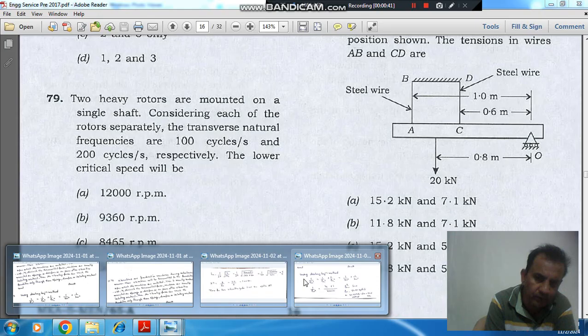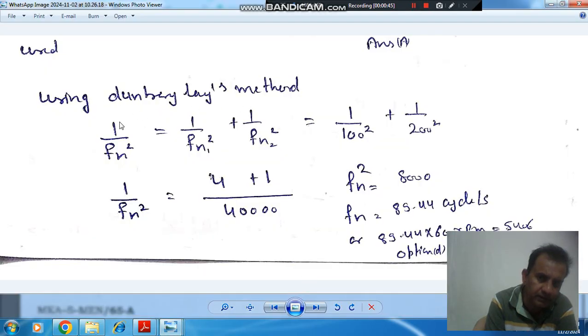According to Dunkerley's method, the combined natural frequency of the two rotors is: 1/fn² = 1/fn1² + 1/fn2². Here fn is the combined natural frequency of the system, fn1 is the natural frequency of the first rotor, and fn2 is the natural frequency of the second rotor.